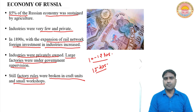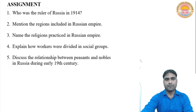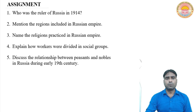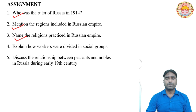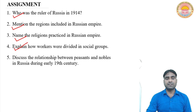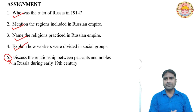This is the economy of Russia. Now the assignment based on today's video: Who was the ruler of Russia in 1914? Mention the regions included in the Russian Empire and their present-day names. Name the different religions practiced in the Russian Empire. Explain how workers were divided into social groups. These questions will be discussed in the next video. In the next video we will also discuss the relationship between Peasants and Nobles, and the conditions that caused the revolt in Russia. Thank you, have a nice day.